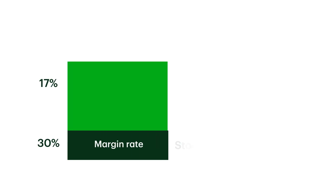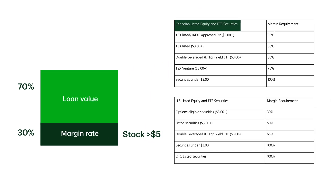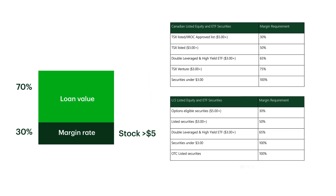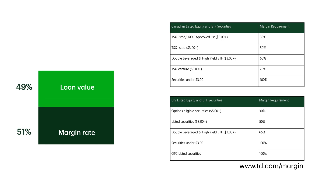A common rule of thumb is that any large company with a stock price over $5 has a margin rate of 30%. But be aware that margin rates and loan values can change any time if the stock or market experiences a change, like in volatility or liquidity.